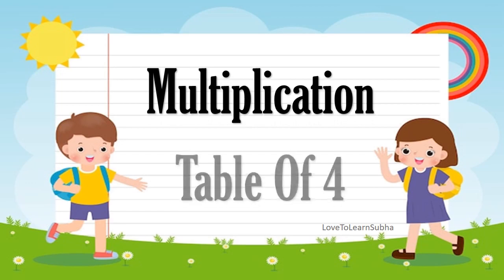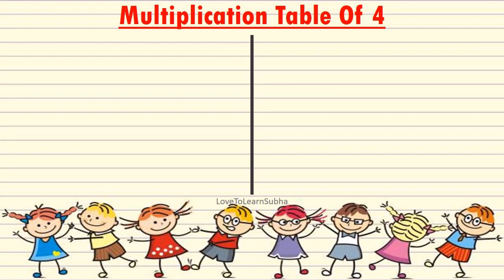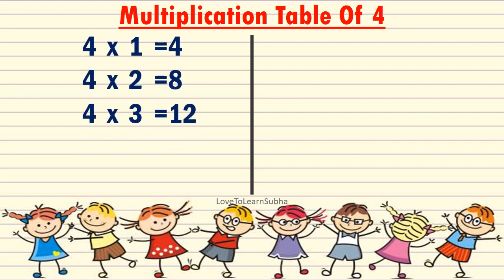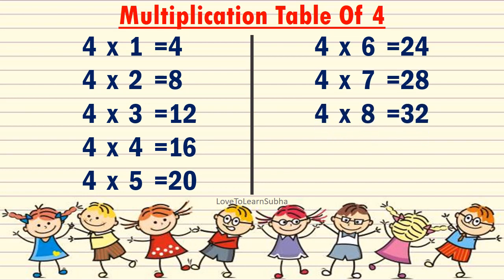Multiplication table of 4: 4 1s are 4, 4 2s are 8, 4 3s are 12, 4 4s are 16, 4 5s are 20, 4 6s are 24, 4 7s are 28, 4 8s are 32, 4 9s are 36, 4 10s are 40.